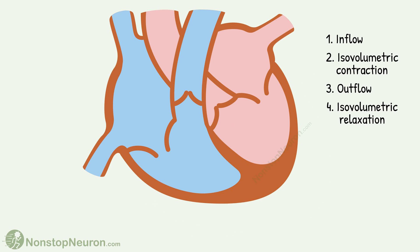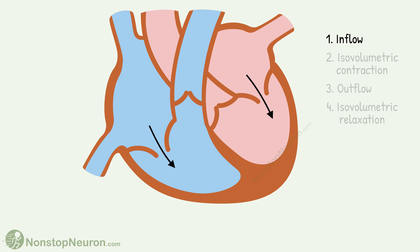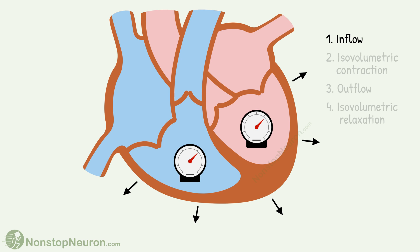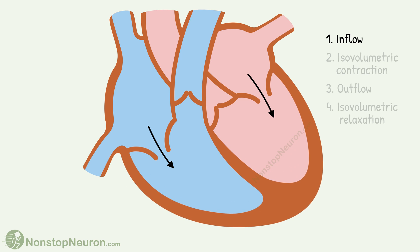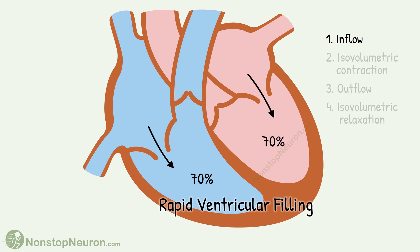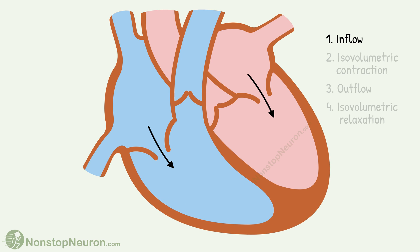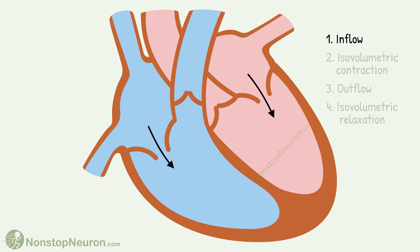Now let's see all the events in more detail, starting with Phase 1. During this, blood flows from the atria into the ventricles. This filling of ventricles occurs in three parts. Before this phase, the ventricles were relaxing isovolumetrically, so the pressure in the ventricles falls. As the pressure falls below that in the atria, the atrioventricular valve opens and blood rushes from the atria into the ventricles. About 70% of ventricular filling takes place during this rapid ventricular filling phase. Then blood flow gets slower — about 20% of ventricular filling occurs during this phase, called diastasis. After that, the atria contract and actively pump blood into the ventricles, accounting for about 10% of ventricular filling. This is called atrial systole.